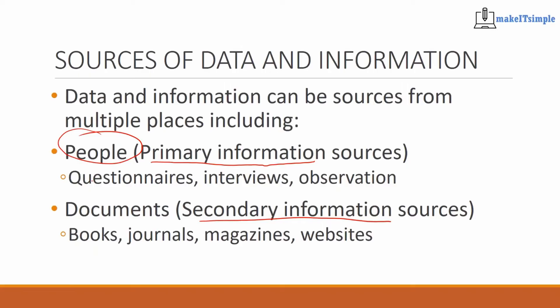Primary information sources will usually be from people — that will usually come from asking them questionnaires, giving them interviews, or observing them. And then secondary information sources will be things like books, journals, magazines, websites. They're called primary and secondary because with primary you actually get it from the person who was there, and secondary you get it from somebody who heard from somebody who wrote about it.